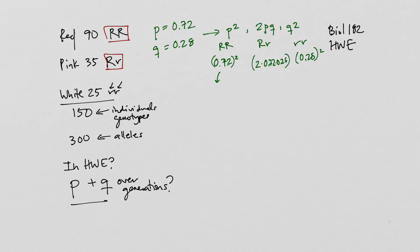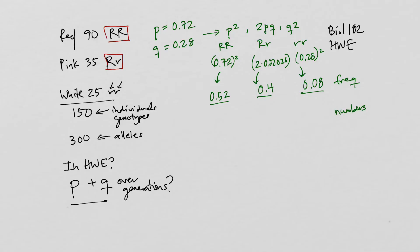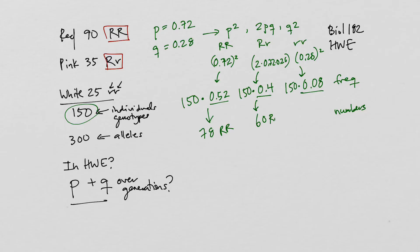Doing the math, the frequency of homozygous dominant individuals is 0.52, heterozygous individuals is 0.40, and homozygous recessive is 0.08. We also want the actual numbers for a population of 150, so we multiply 150 by each frequency. That gives us 78 individuals as big R, big R (red), 60 individuals as heterozygous (pink), and just 12 individuals as homozygous recessive, little r, little r.